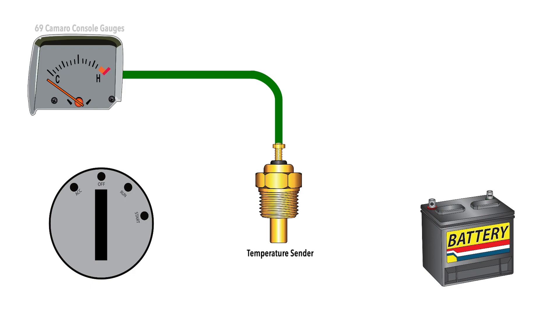In this example using a 69 Camaro, a lower resistance value at the sending unit means a higher reading at the gauge.